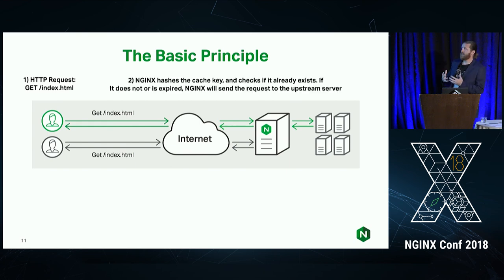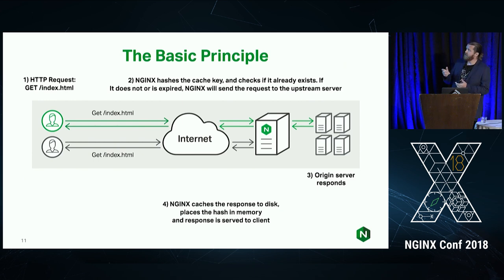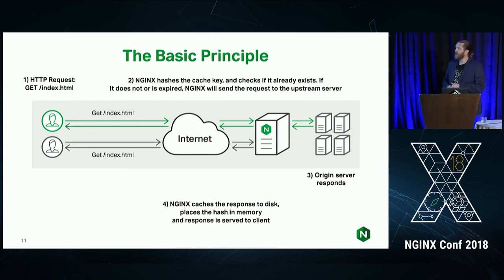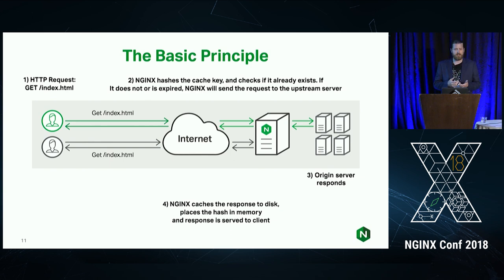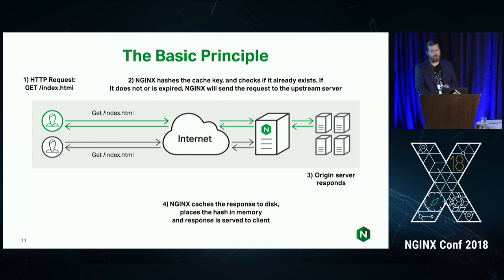The concept is pretty simple. Some kind of request comes through the internet and hits a cache server — more than likely NGINX. NGINX checks a cache key that you define in the configuration, which is typically the full URL and request with all URL arguments by default. It hashes that and looks in memory to see if that response is already available as a cached asset. It also checks headers like cache control. If it doesn't have it, it goes to the origin, which responds, and then NGINX caches that response on disk. The next customer coming in for the same file — it's already ready.